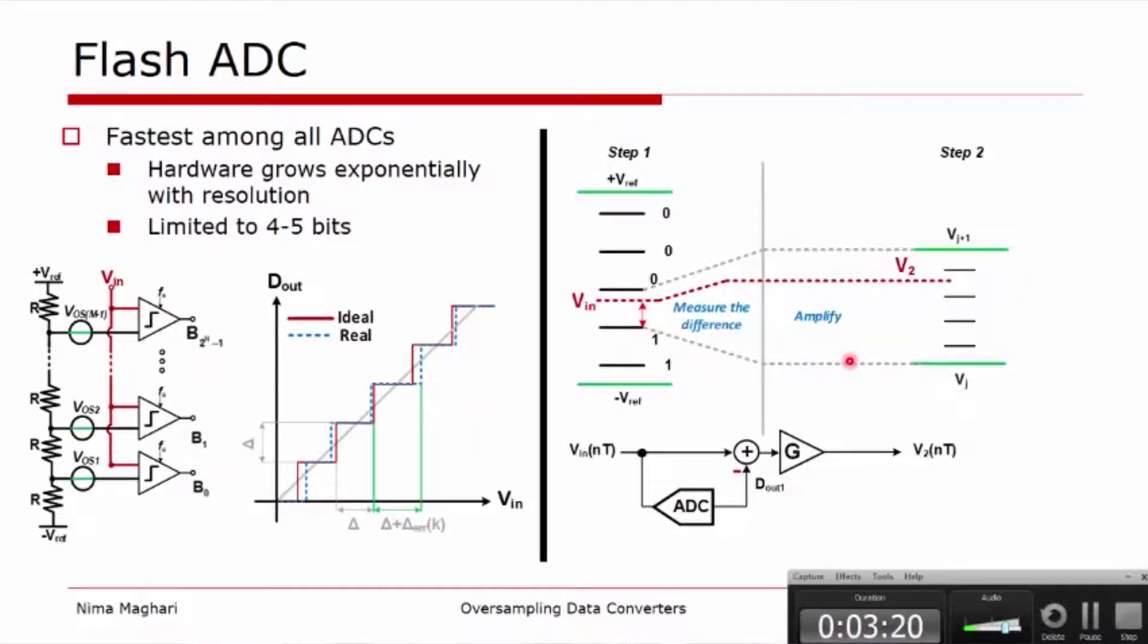The flash ADC that I just showed you is again very fast, is fastest among all of the types of ADC, but the problem is the hardware grows exponentially with the resolutions that we want and it's limited to four to five bits. Here it shows a block diagram of the flash, and in reality you have offset and mismatch between the comparators and the resistor ladder references. Therefore the more number of bits you want, the more critical these mismatches will become.